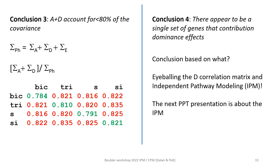Conclusion number 4: there appears to be a single set of genes that contribute to the dominance effects. I base that on the fact that the correlations in the R_D matrix — the standardized sigma D matrix — are all about 1. You can eyeball the D correlations, but you can also test that formally, which is a subject of the next PowerPoint presentation on independent pathway model modeling, which Dirk Pelt will be presenting. This concludes the second PowerPoint — the step from bivariate to multivariate twin modeling.